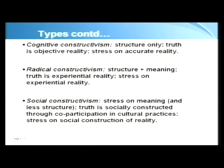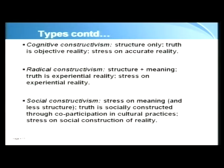What you finally see is the summary of cognitive, radical, and social constructivism. For cognitive constructivism, the individual cognitive structure is very important. Truth is objective reality — reality existing outside — and to what extent one can fill in or match with the existing external reality and bring in one's own cognitive structure to play with that and therefore learn. The stress is on accurate reality and how accurately one could learn. This is different from behavioristic theory in the sense that it brings in a whole lot of internal processes within the individual vis-à-vis the external reality that exists outside.